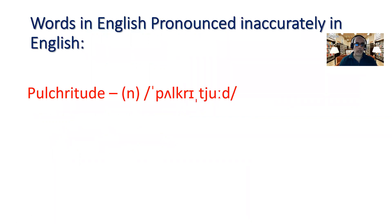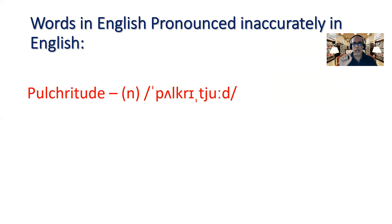The first word we're going to explore is pulchritude. Now I'm not sure exactly if I pronounce this word correctly, but to find out, the first thing I'm going to look at is the phonemic script of the word. I see that the word contains three sounds, and the first sound contains a small mark at the top of the letter, which refers to stress. That means the first sound 'pull' needs to be stressed, so you pronounce it with a heavy sound — 'pull'. Now the next sound is 'cry'.